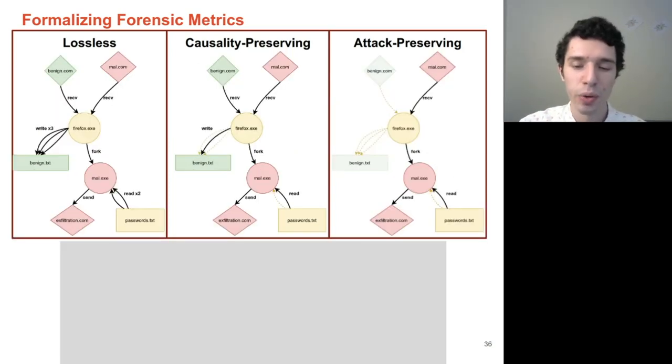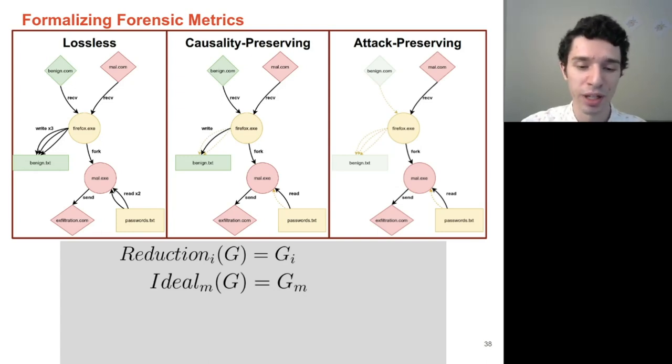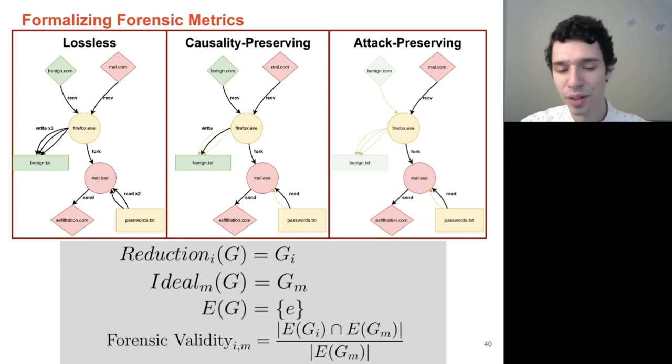Utilizing these metrics, we can calculate the amount of forensic validity left over in an approximated audit log. If g sub i represents the reduction method i to g, and g sub m represents the ideal approximation of g given metric m, and e simply produces a set of edges, then the amount of forensic validity left over is simply the number of shared edges between the ideal graph and the reduction graph over the number of edges of the ideal graph.